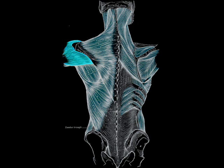The deltoid is a frequent site to administer intramuscular injections. From this extensive origin, the fibers converge toward their insertion — the middle passing vertically, the anterior obliquely backward and laterally, the posterior obliquely forward and laterally. They unite in a thick tendon, which is inserted into the V-shaped deltoid tuberosity on the middle of the lateral aspect of the shaft of the humerus. At its insertion, the muscle gives off an expansion to the deep fasciae of the arm.